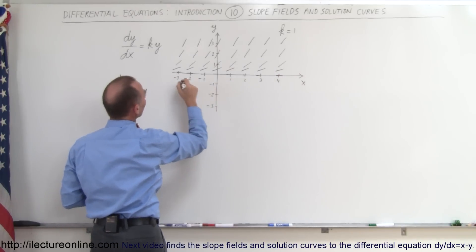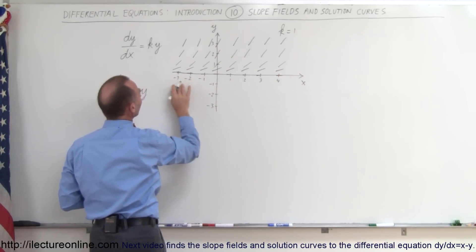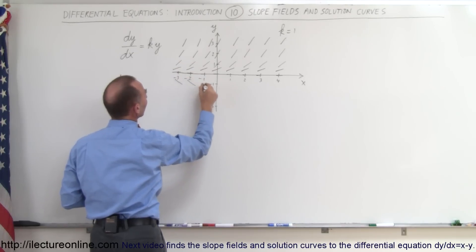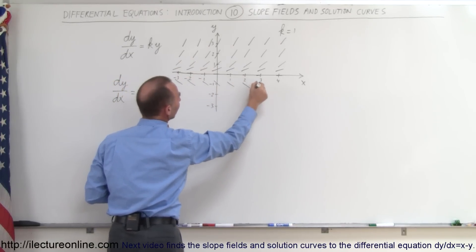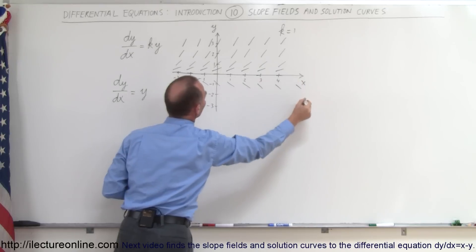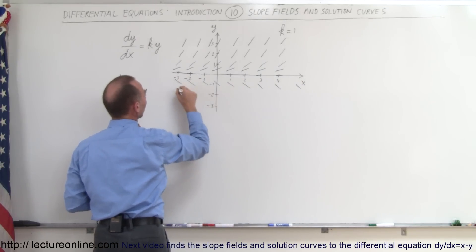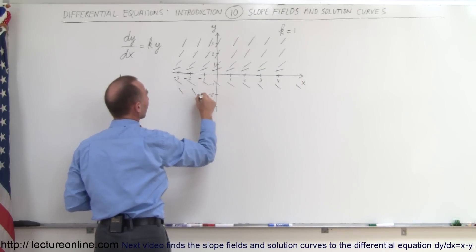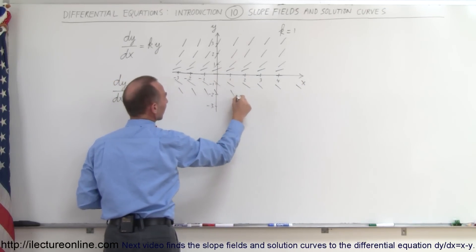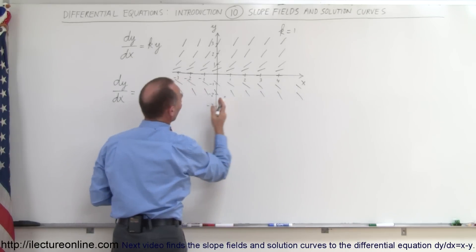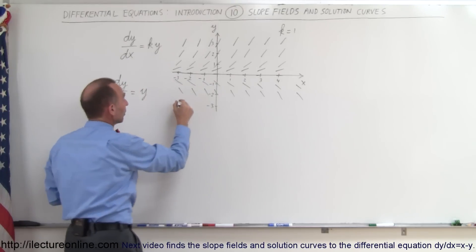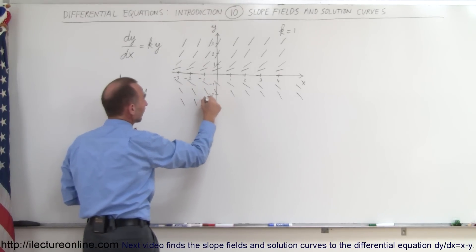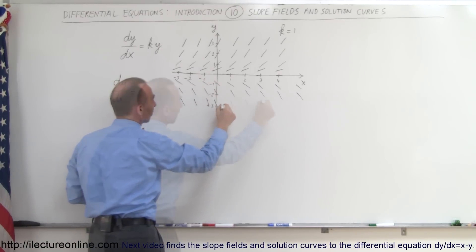When y is equal to negative 1, the slope is negative 1 — that would look about like this. You can see what the slope would look like anywhere along the y equals negative 1 line. And the y equals negative 2 line, the slope would be steeper than that. At y equals negative 3, the slope would be negative 3, so the slope would look like that at these locations.